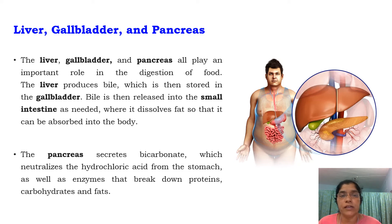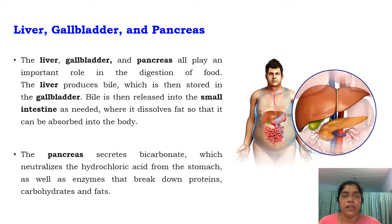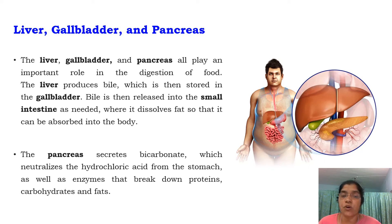The liver, gallbladder and pancreas play a vital role in the digestion of food. The liver produces bile which is then stored in the gallbladder. Bile is then released in the small intestine as and when needed; it dissolves fat so it can be absorbed into the body.